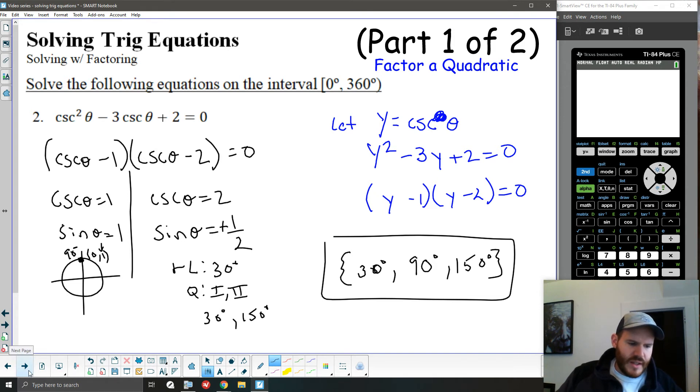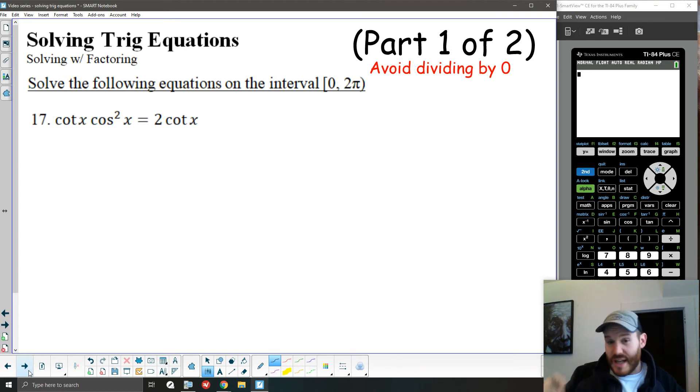The last thing I want to mention in this video is one problem that I commonly see that students run into. If you go through solving a trig equation by factoring, and you're missing a solution, this is possibly one of the things that might have happened to you. You might have accidentally divided by 0 somewhere along the problem.